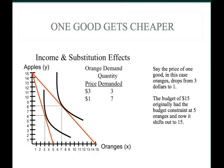We're going to walk through an example with a budget constraint between apples and oranges. We originally had a certain budget constraint, and now it has rotated—staying the same for apples but with the number of oranges shooting up drastically, because the price of oranges dropped. Say we have $15: the price of an apple is $1, so we can consume 15 apples, and the price of an orange was $3, giving a max of 5 oranges.